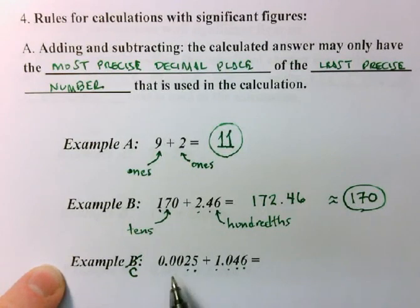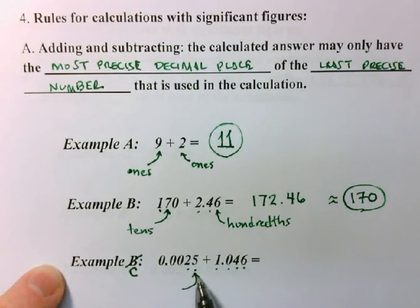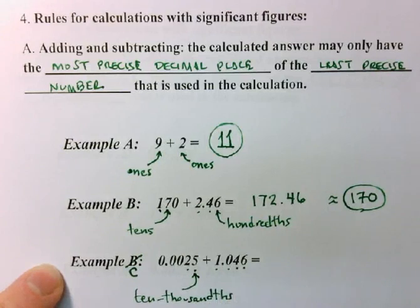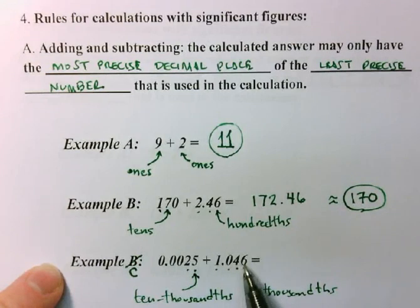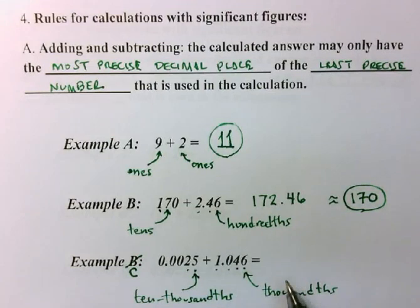Well this number is precise out to the four places past the decimal. We would say that's out to the tenths, hundredths, thousandths, ten thousandths place. This number is only precise out to the tenths, hundredths, thousandths place. So this number is less precise, and so my answer can be reported only out to the most precise position of that least precise number. So my answer, therefore, is going to be reported out to the thousandths place.